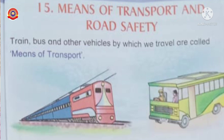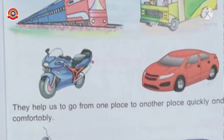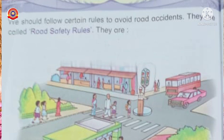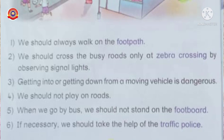Chapter 15: Means of Transport and Road Safety. Train, bus, and other vehicles by which we travel are called means of transport. They help us to go from one place to another place quickly and comfortably. For the transport of goods, trucks and carts are used. We should follow certain rules to avoid road accidents; they are called road safety rules.